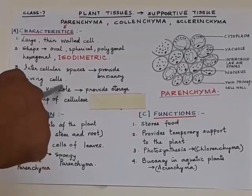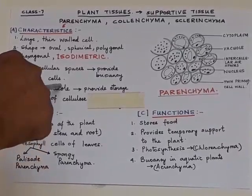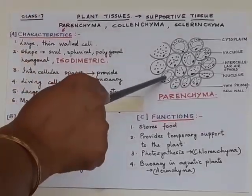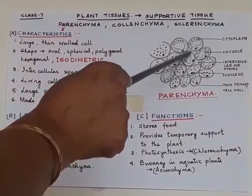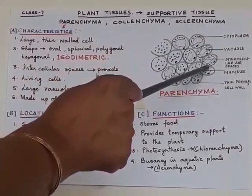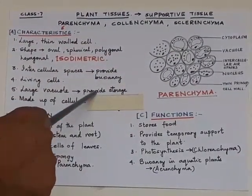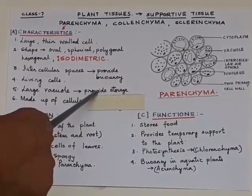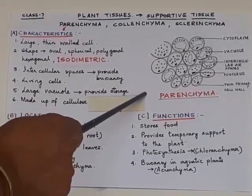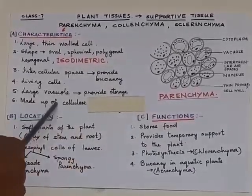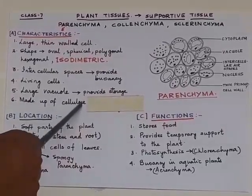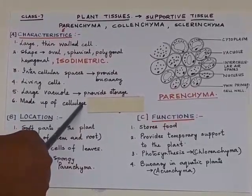Parenchymatic cells are living cells. They have a large vacuole — you can see the large vacuoles in the diagram. These vacuoles provide storage; an example is a potato. The parenchymatic cells are made up of cellulose.